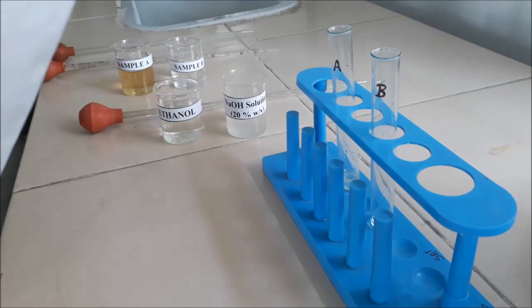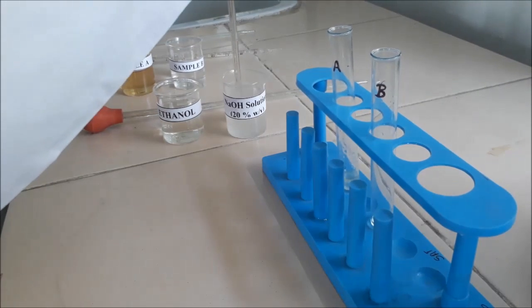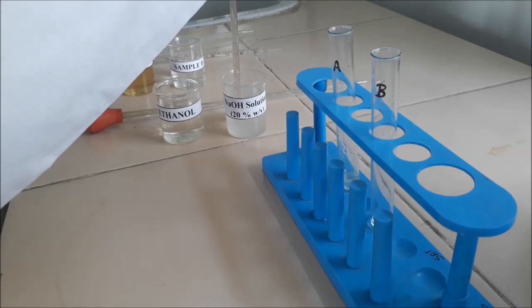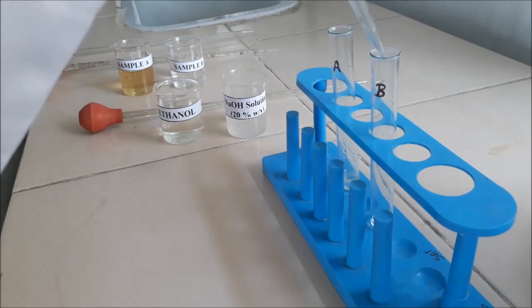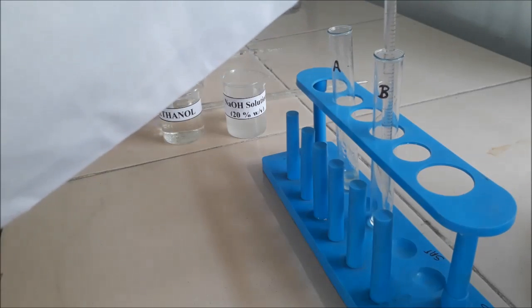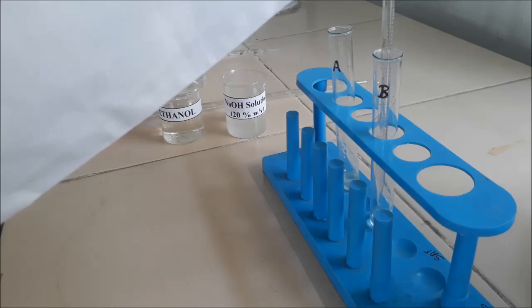Use freshly prepared annulus solution for the test. Again pipette out the same quantity that is 1 ml of annulus solution and then transfer it into test tube B.